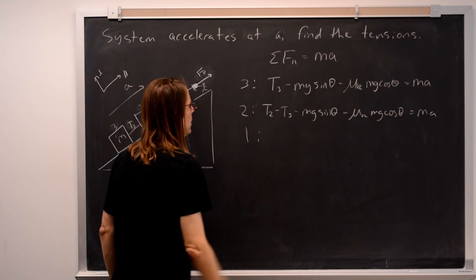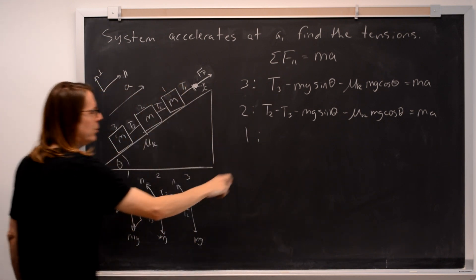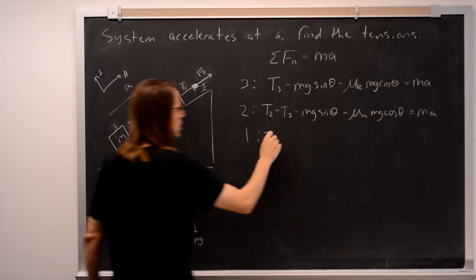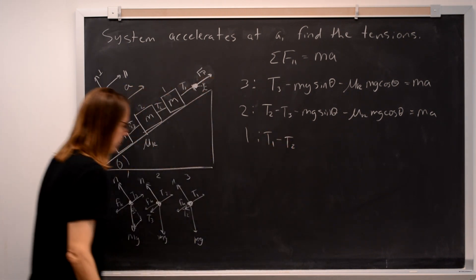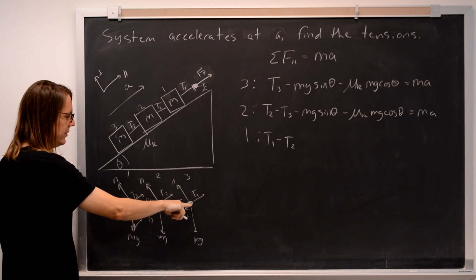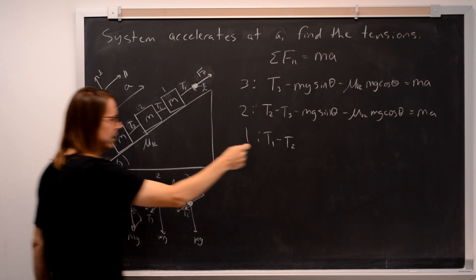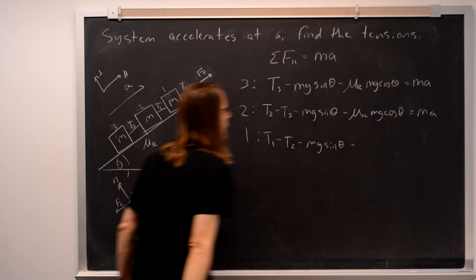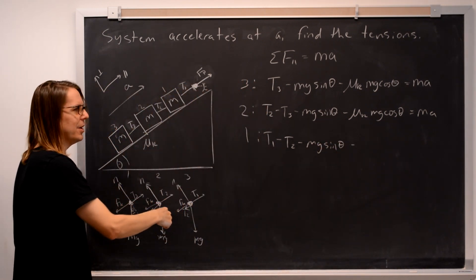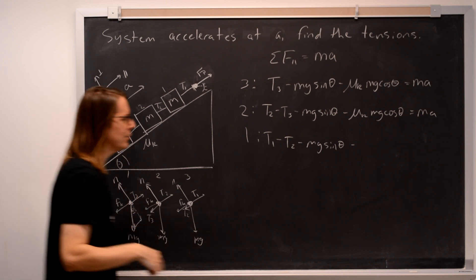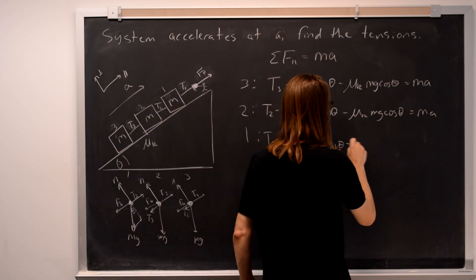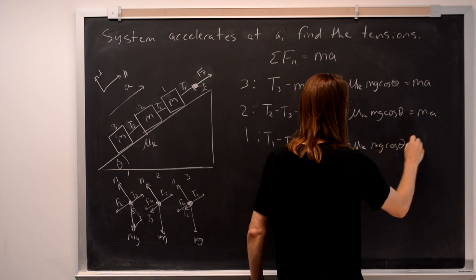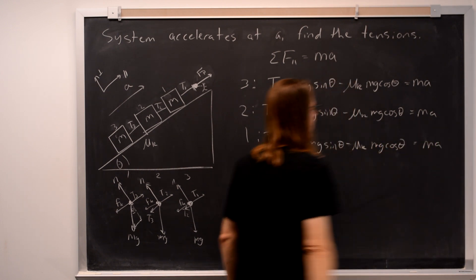Let's look at one. One, T1 is pulling it forward. T2 is pulling it back. And the component of the weight down is again mg sine theta. And the friction force pulling it down is again mu k times the same normal force. Minus mu k mg cosine theta. And it's the same mass pulling it at the same acceleration.